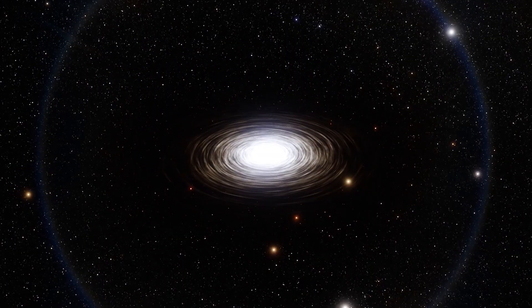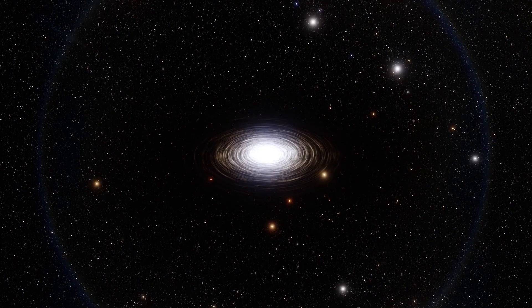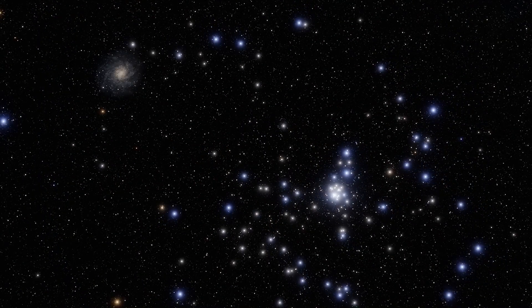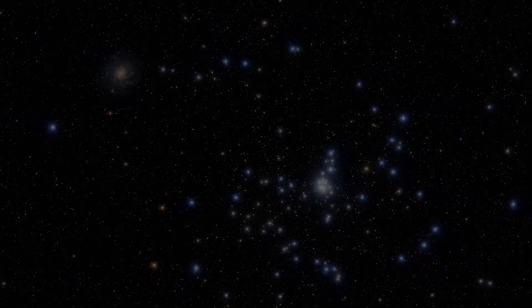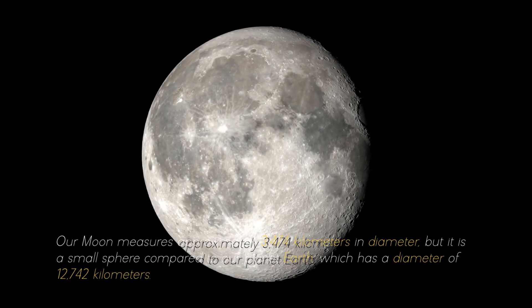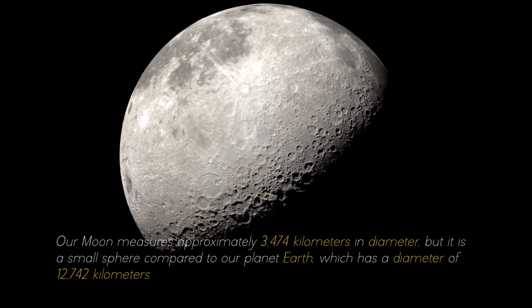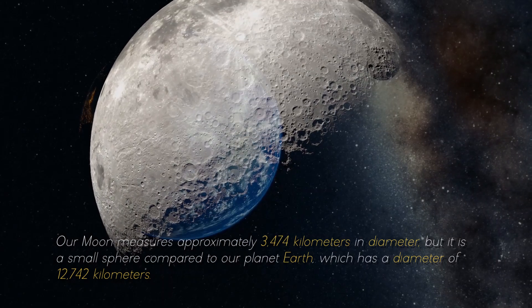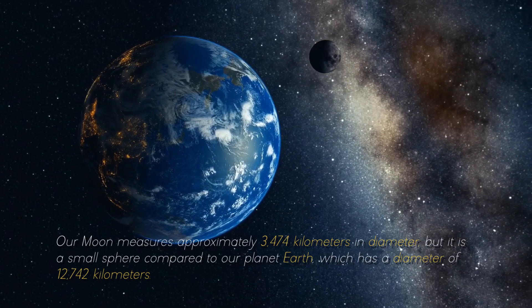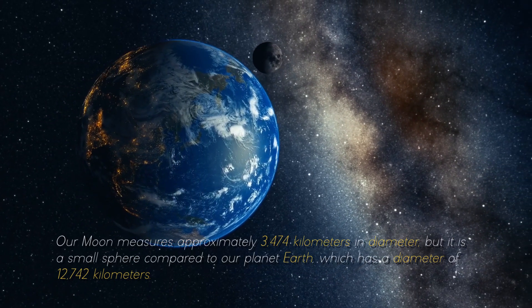To give you an idea of the colossal objects and structures that abound in the cosmos, it is necessary to start at the beginning. Our moon measures approximately 3,474 kilometers in diameter, but it is a small sphere compared to our planet Earth, which has a diameter of 12,742 kilometers.